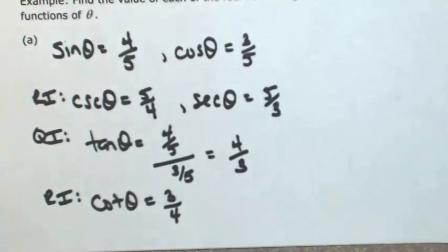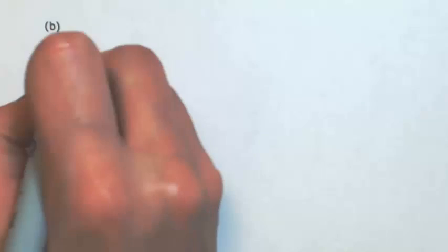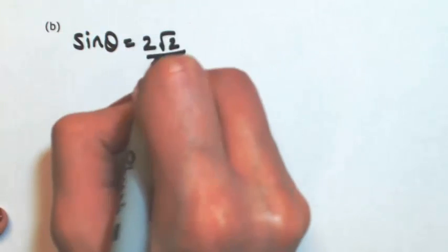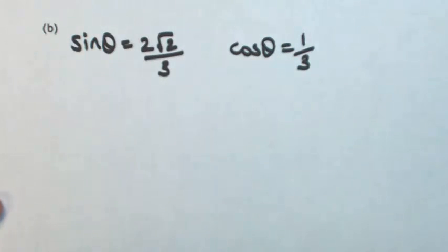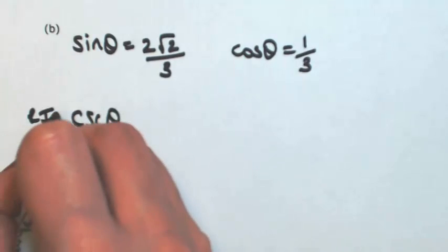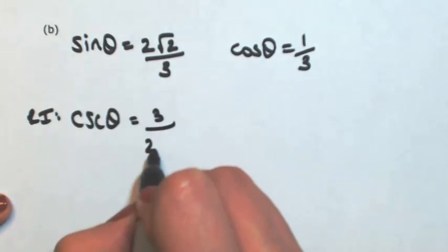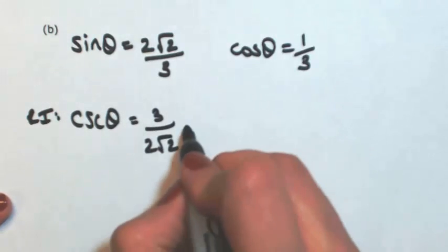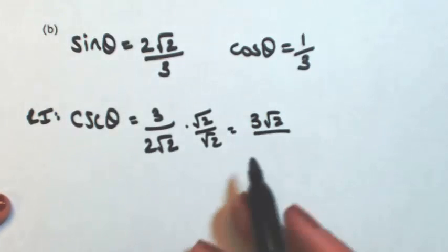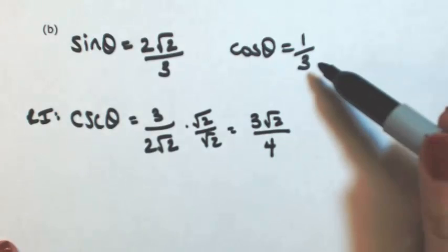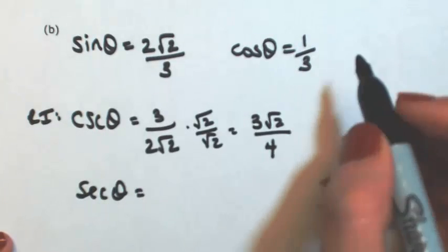Let's look at one more. Again, I'll give you two trig functions and we'll find the other four. Let's say the sine of theta is 2√2 over 3, and the cosine of theta is 1/3. Once you're given a trig function, you immediately know its reciprocal. So the cosecant of theta, using reciprocal identities, would be 3 over 2√2. Rationalizing by multiplying top and bottom by √2, we get 3√2 over 4. We also know the secant of theta is the reciprocal of cosine, so that's 3.